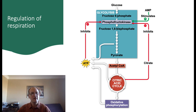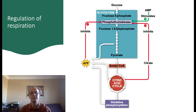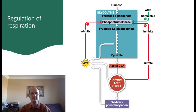Finally, citrate from the citric acid cycle also serves as an inhibitor of phosphofructokinase. When citrate builds up in the mitochondria, some of it leaks out and serves as an inhibitor. This actually helps the cell to synchronize the rate of glycolysis in the cytosol with the citric acid cycle in the mitochondria. Taken together, these mechanisms of regulating the speed of the glycolytic pathway give the cell very tight control over how much ATP is produced depending on the energetic demands of the cell at any given time.